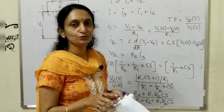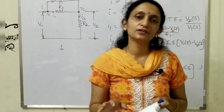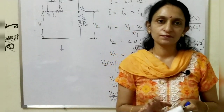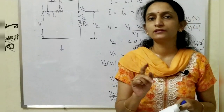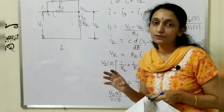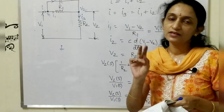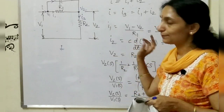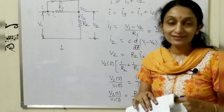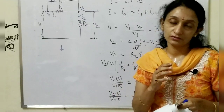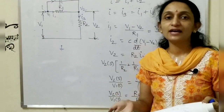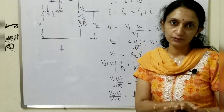We have discussed two numericals. The first is based on the series circuit and the second on the parallel circuit. Remember three steps: one, find the voltage or current equation depending on series or parallel circuit; two, take the Laplace transform; three, find the transfer function. The transfer function is not necessarily always a voltage ratio V2(S)/V1(S) — it is Laplace transform of output to Laplace transform of input.